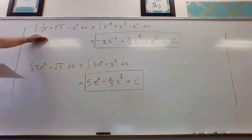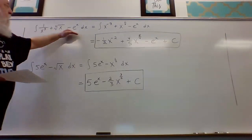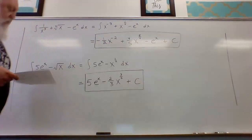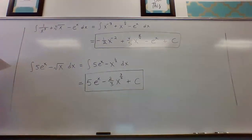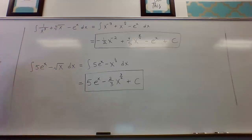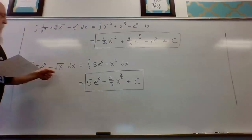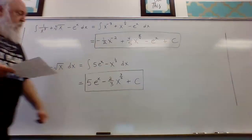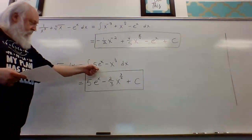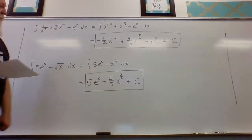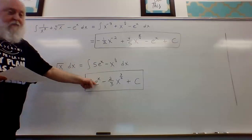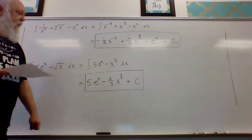The antiderivative of one over x cubed plus the fourth root of x minus e to the x is shown in the rectangle. In example four, we find the antiderivative of five times e to the x minus the square root of x. The square root of x is rewritten as x to the one-half. The antiderivative of five times e to the x is five times e to the x.